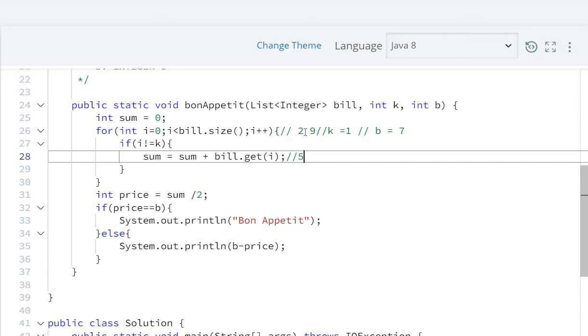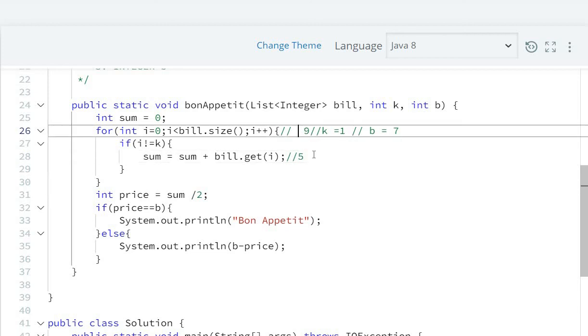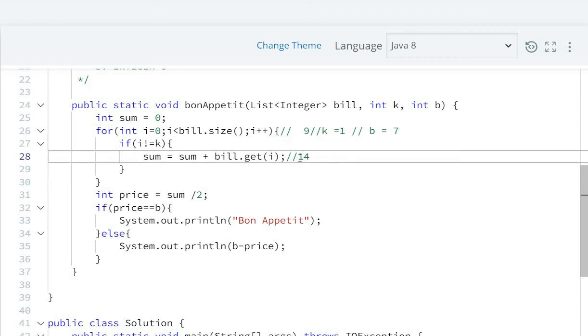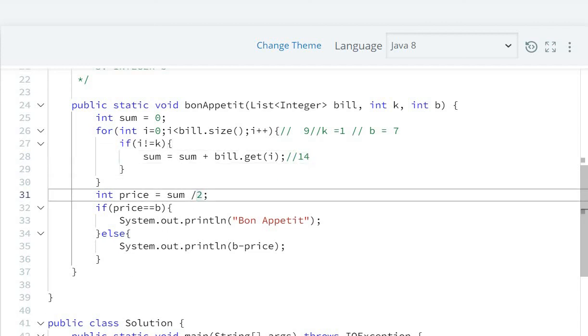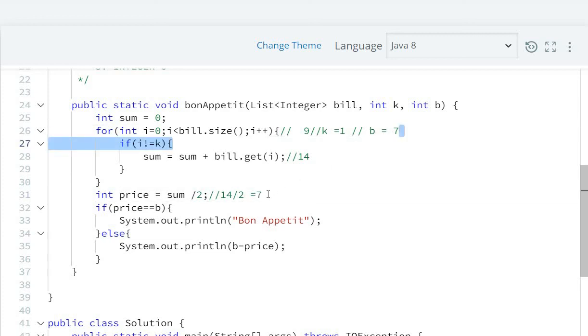Then next is 9, 9 plus 5 is 14, so our total price is 14. Since it's shared, the price I have to pay is 14 divided by 2 equal to 7. The b value is 7, so price is same.